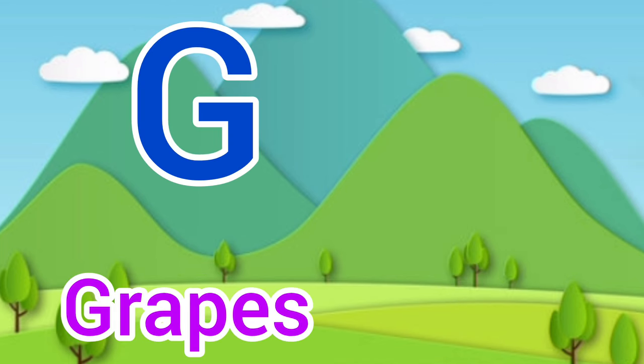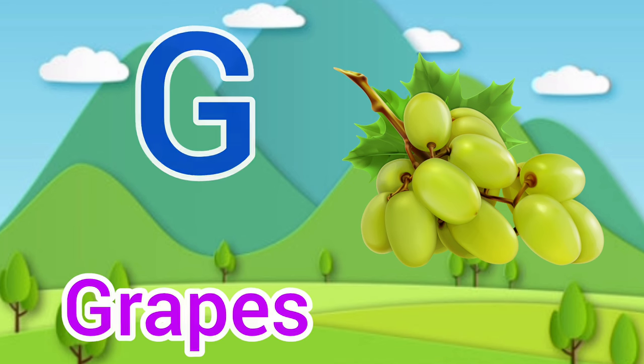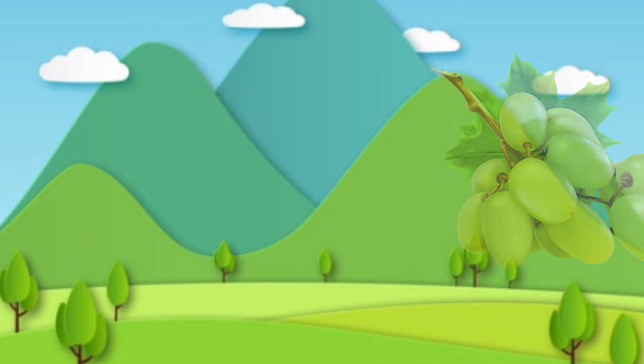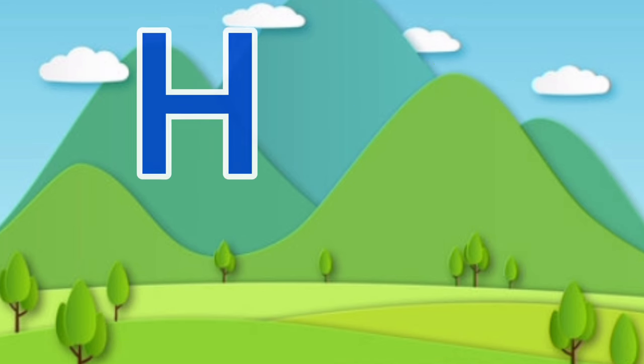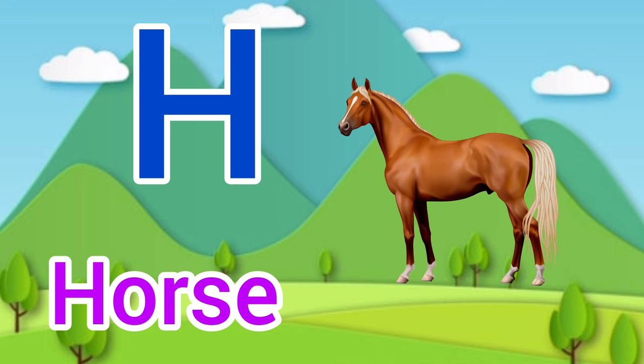G for grapes, grapes means anggur. H for horse, horse means ghoda.